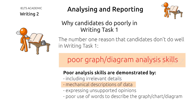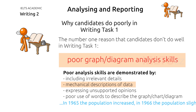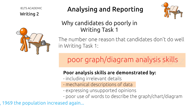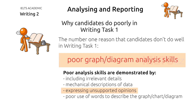Another error often made is candidates mechanically repeat the same thing over and over again. For example, sentences like: 'In 1965, the population increased. In 1966, the population slightly increased. In 1968, the population decreased. In 1969, the population increased again.' This is what I call a mechanical description of data, and it will result in a low score. Another common mistake is giving opinions or making statements not supported by the data. You cannot make assumptions or guesses — you must use only the information presented in the question. One other way students do poorly is simply in the words they use. The vocabulary used in this type of task is quite specialized and needs to be developed and practiced.